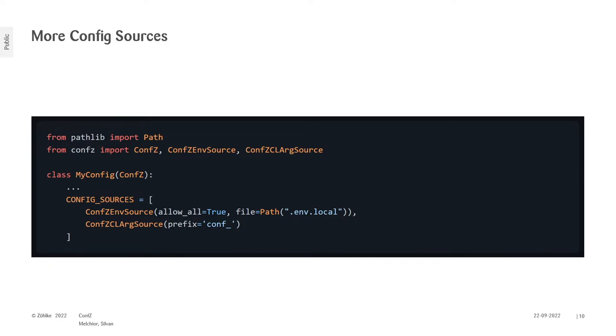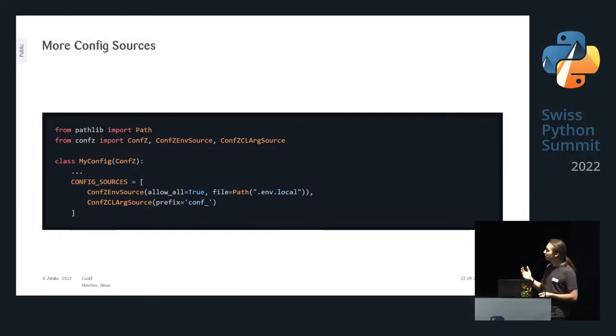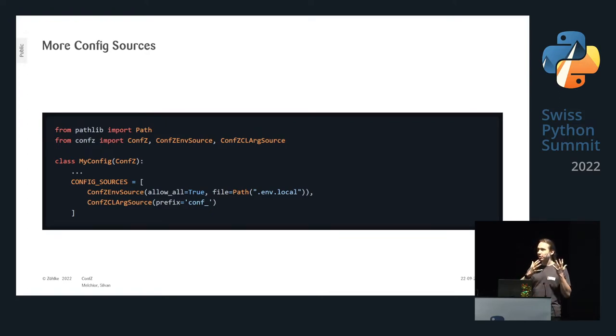The `config_sources` field is flexible — it can also be a list, where later sources overwrite earlier ones. For example, you can add an environment source with `allow_all=True` and optionally a `.env` file fallback. You can also add command line arguments, filtering those that start with `conf`. With just these two lines of code you can define an application where environment variables are the base but are overridden by CLI arguments — useful for hyperparameter testing on SageMaker.